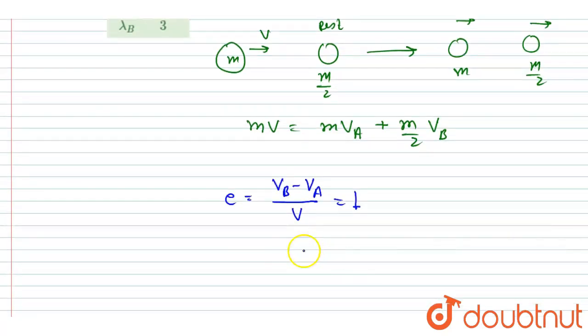I will put the value of e equals 1. So I will write vB minus vA equals v. So you can cancel out this m and you will get 2v equals 2vA plus vB. So this will be equation 1 and this will be equation 2.